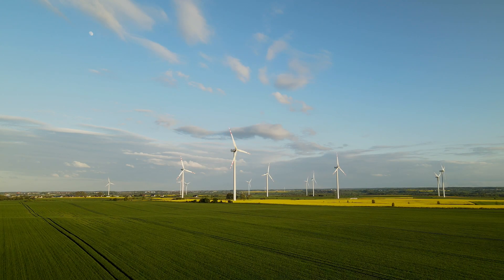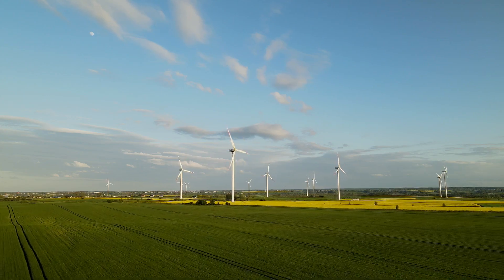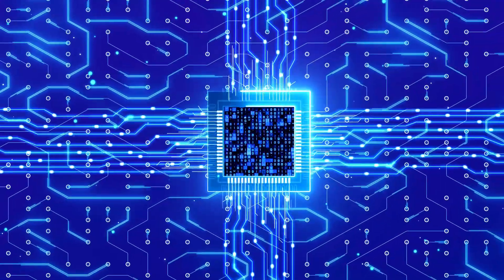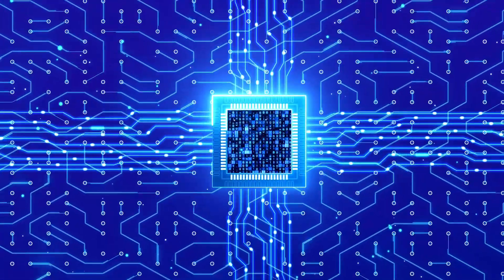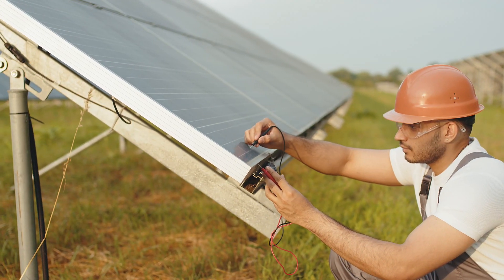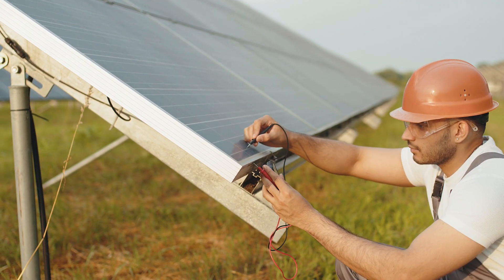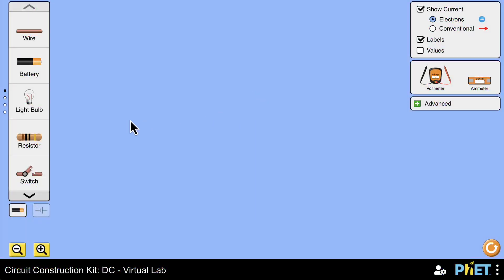Electricity is a form of energy, just like light. It's basically the flow of electrons. But how can we get it, and how can it be used safely? Let's explore this together.